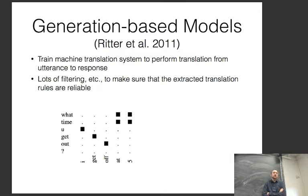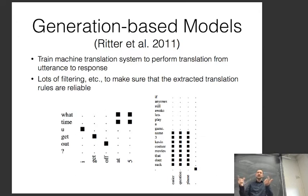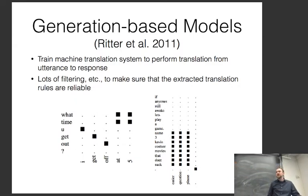Dialogue generation is much harder than regular machine translation because dialogue has things like this — 'Name three Kevin Costner movies that don't suck,' and the answer is 'Easier question please.' You can see there's no direct correspondence between these. In machine translation you get idioms like 'kick the bucket' meaning 'die,' where you map it all at once. But in dialogue there's much more indirect translation between things. So in order to make this actually work, they had to do a lot of filtering of the rules.